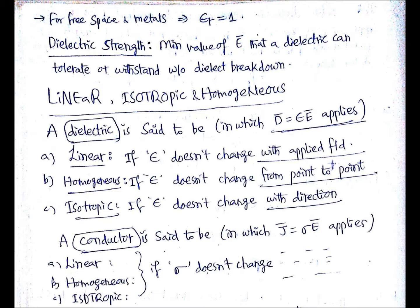For homogeneous, if permittivity doesn't change from point to point in that particular dielectric, so that entire dielectric should have uniform permittivity of constant permittivity value. It should not change from one point to another point - that is meant by homogeneous.